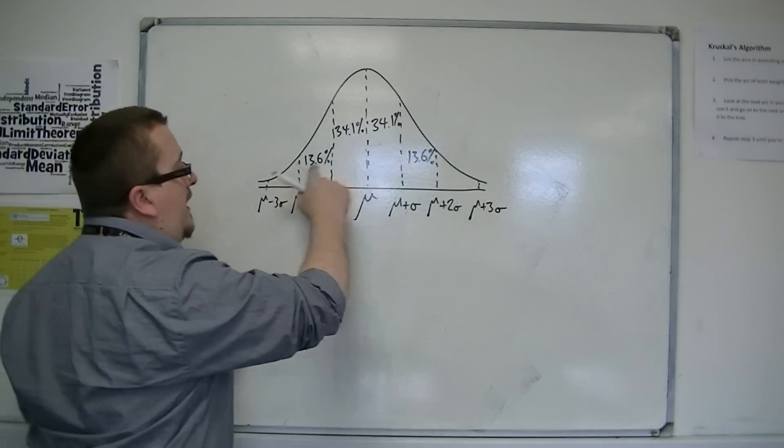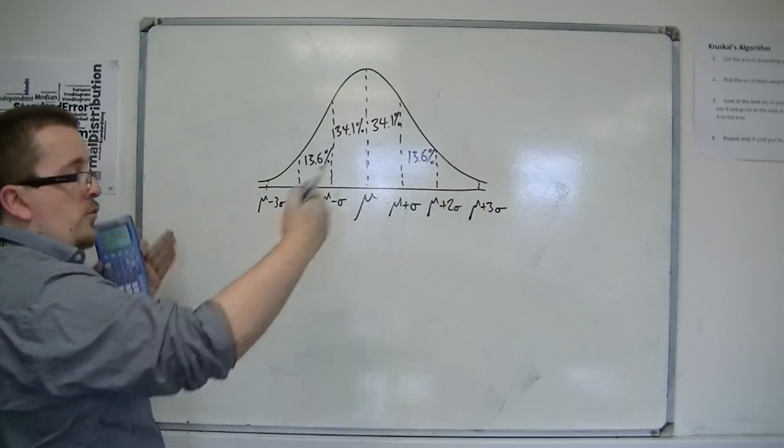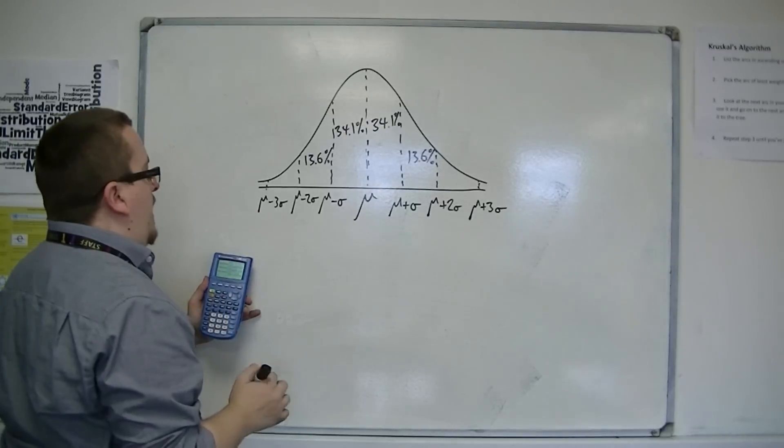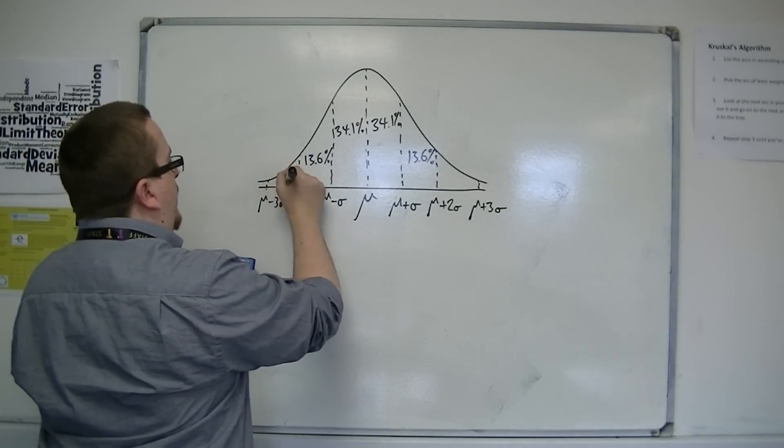And then finally, if you go into three standard deviations away, then each of these smaller sections would be about 2.1%.